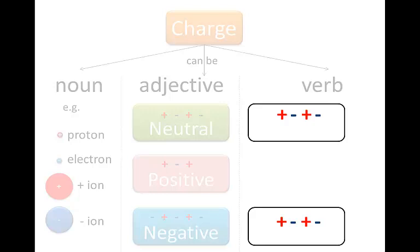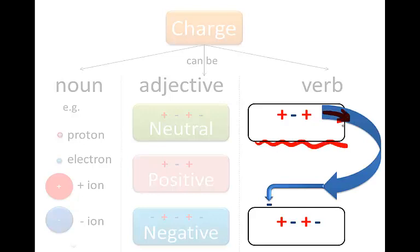Now what happens when you rub two objects together is that you rub electrons off one of the objects onto the other object. So the one which holds its electrons looser loses electrons and the other one gains those electrons because electrons can't just disappear.